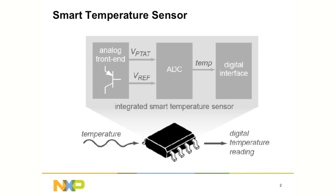If the actual temperature is 25 degrees C, then the sensor can output a number from 23 to 27 degrees. In other words, plus or minus 2 degrees around the actual number.